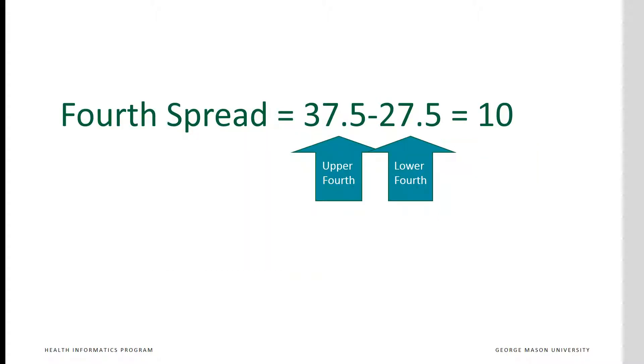The fourth spread is the difference between the upper and the lower fourth, which is 37 and a half minus 27 and a half, or 10 points.